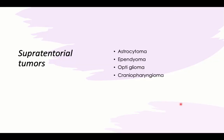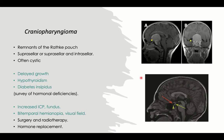Supratentorial tumors include astrocytoma, ependymoma, oligodendroglioma, or craniopharyngioma. Craniopharyngioma is a famous condition especially with pediatric endocrinologists, due to its presenting endocrinological manifestations.